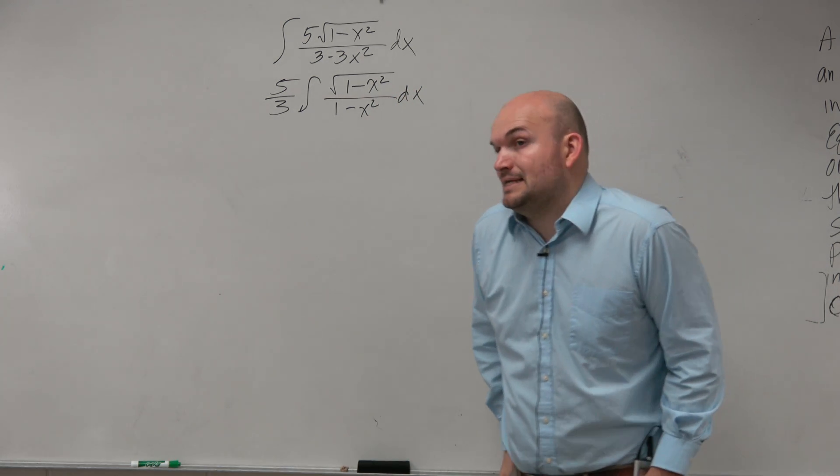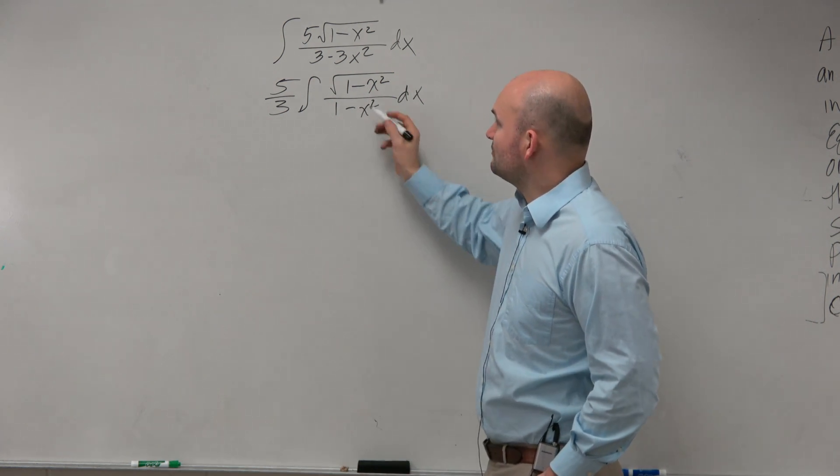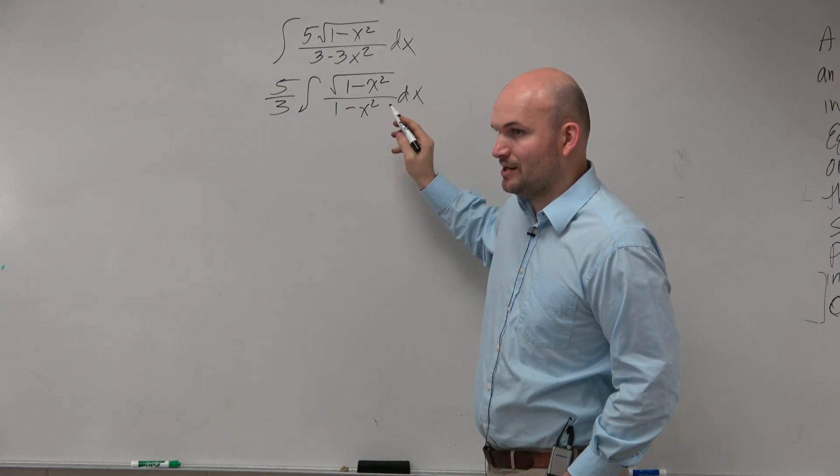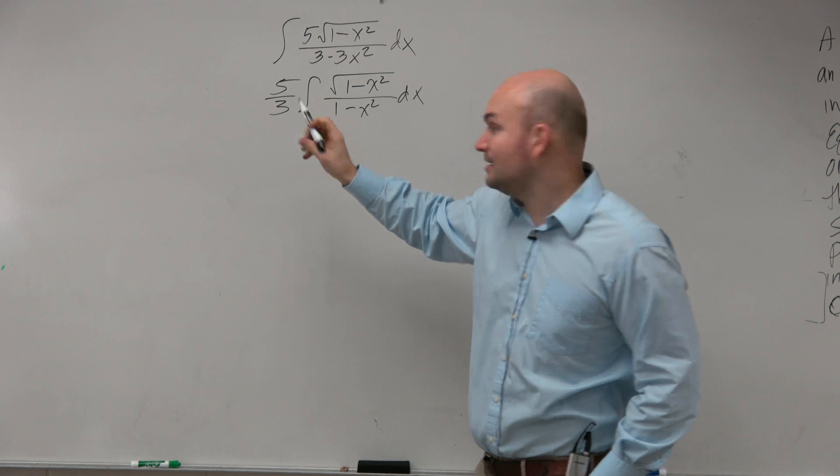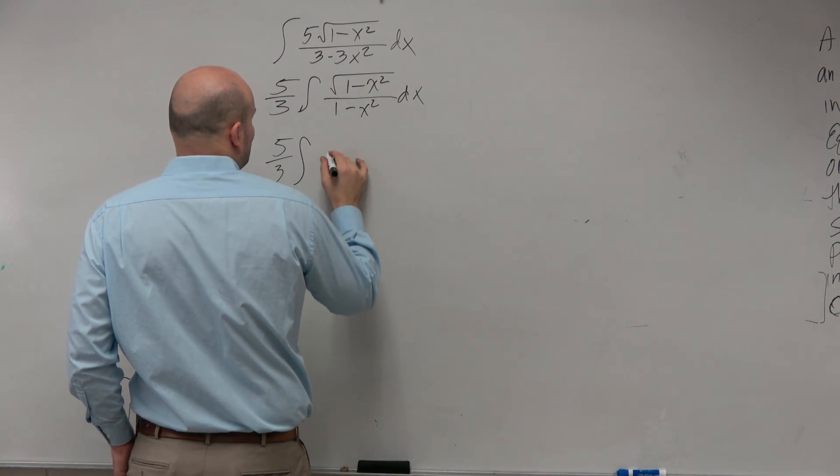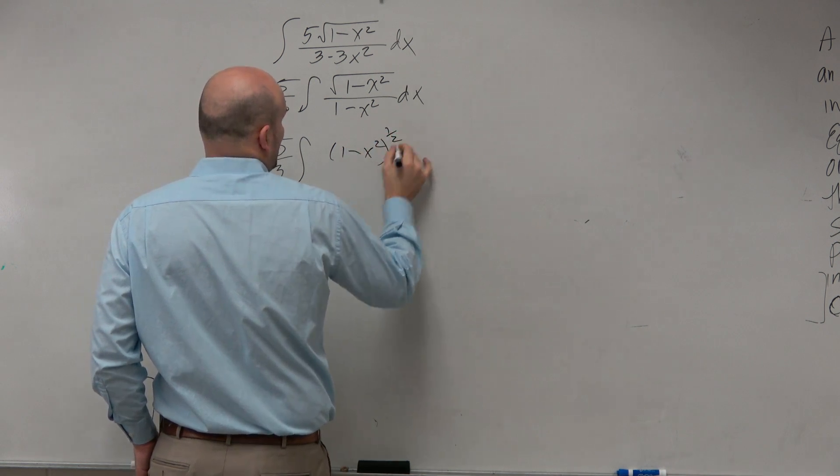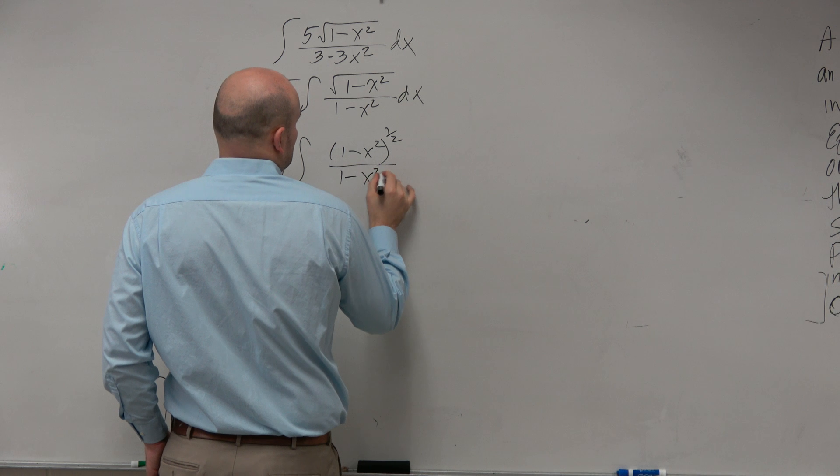Now, this might still be like, I still don't know what to do here. But what I start to see is, I have 1 minus x squared and 1 minus x squared. I don't like the square root, but this might look a little bit easier to understand if I rewrite this as 1 minus x squared to the 1/2 power over 1 minus x squared.